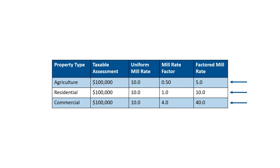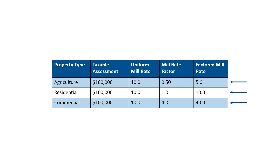Remember, the properties have the same taxable assessed value. Therefore, when the mill rate factors mentioned earlier are considered, the property tax levy for the agricultural property will be $500, $1,000 for the residential property class, and $4,000 for the commercial property.